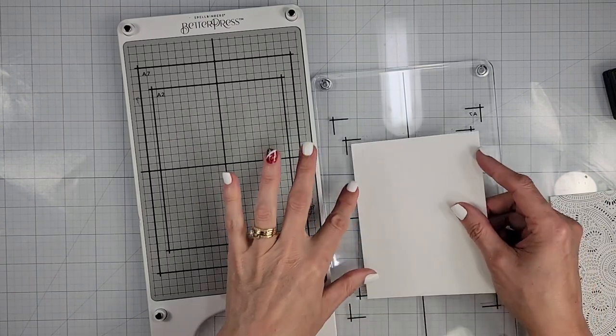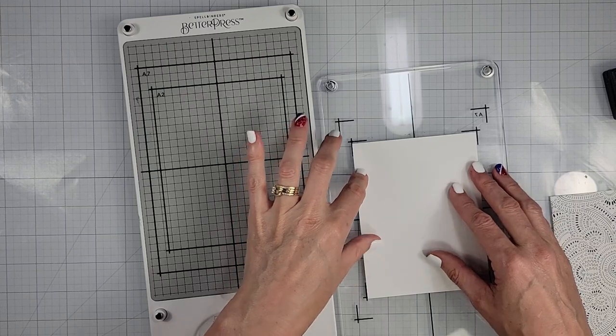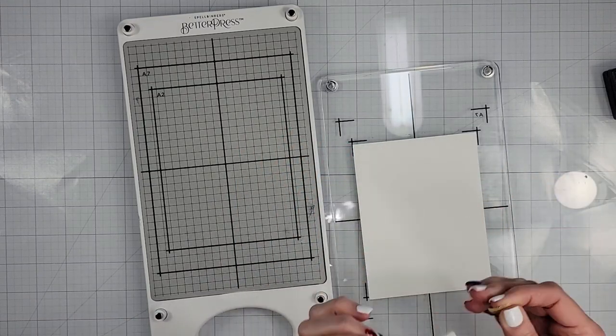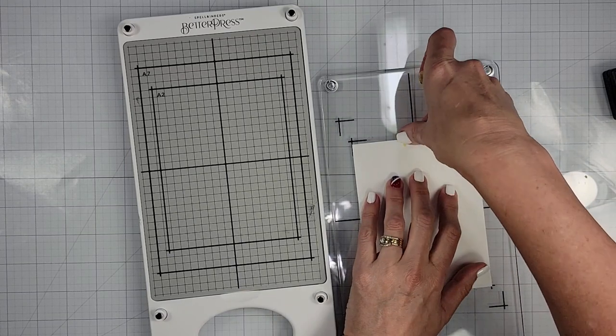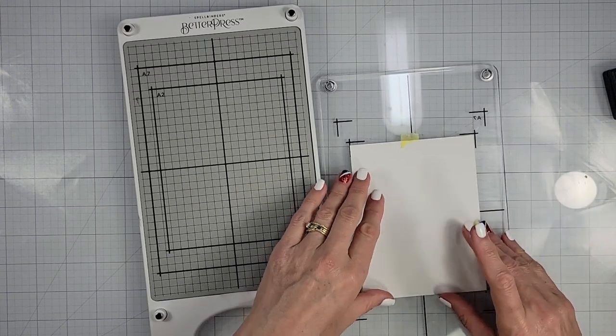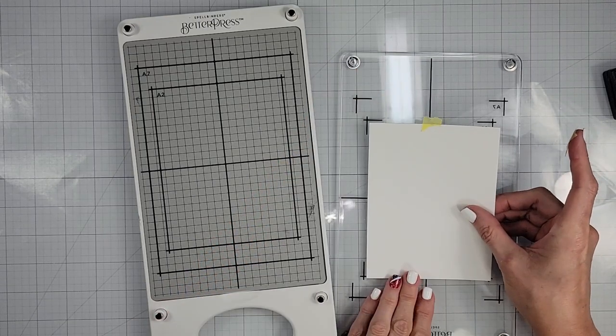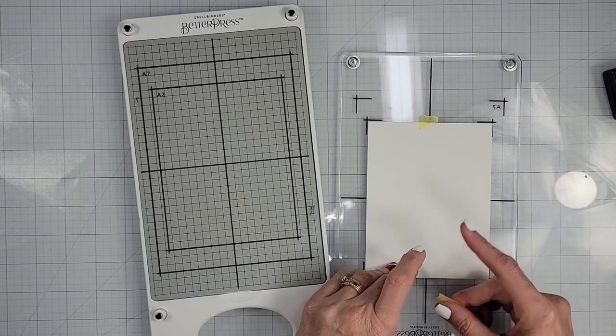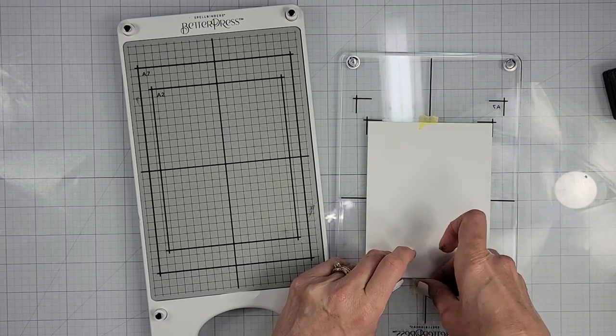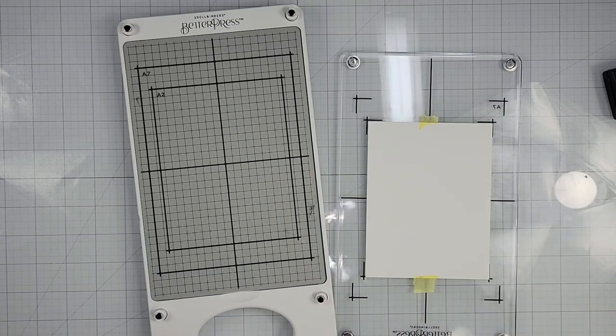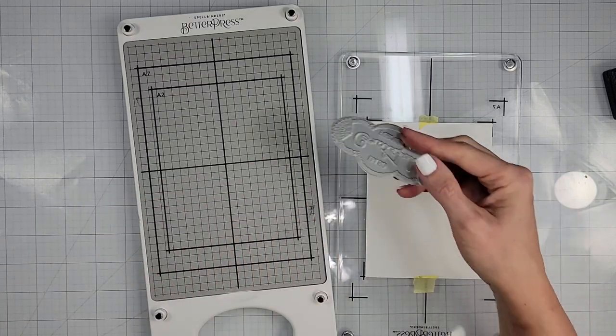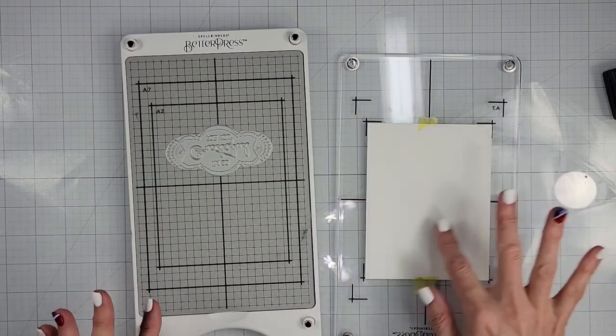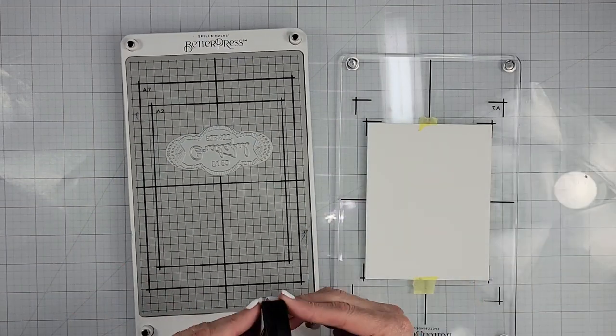But for right now, I am going to take and put this into place. And this is the piece that I will be cutting my sentiment out of. So I'm just going to quickly grab it. And up here is fine because I don't need to waste the whole piece of cardstock.